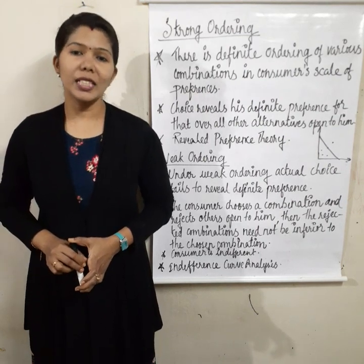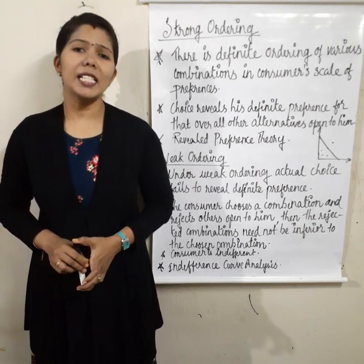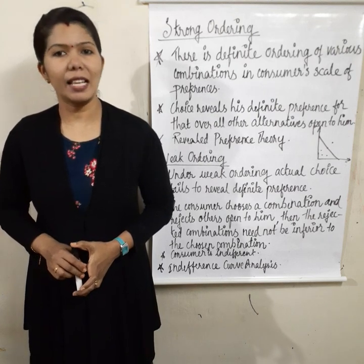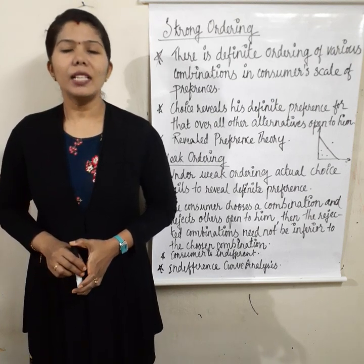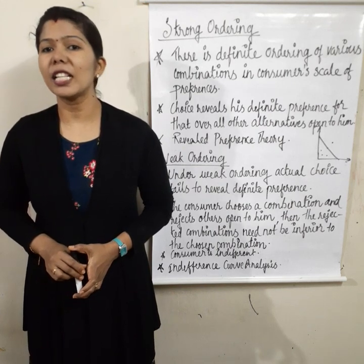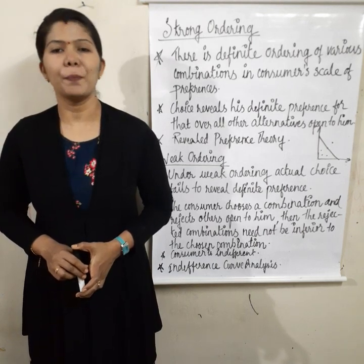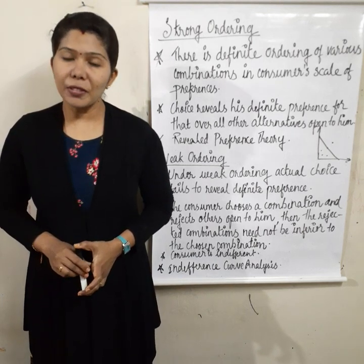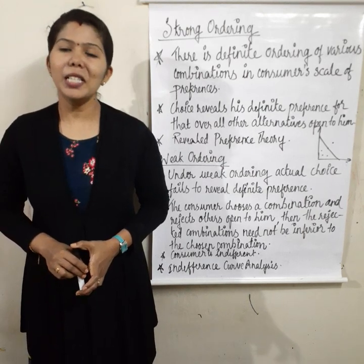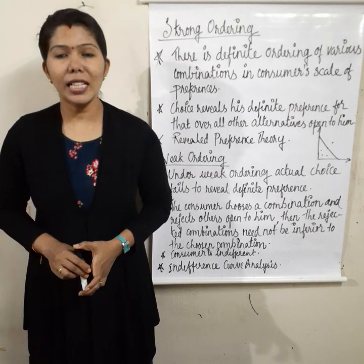Today we discuss strong ordering and weak ordering. Now we already know the indifference curve analysis of revealed preference theory. Strong ordering is related to revealed preference theory, because revealed preference theory is based on strong ordering. Revealed preference theory is based on the strong ordering hypothesis.